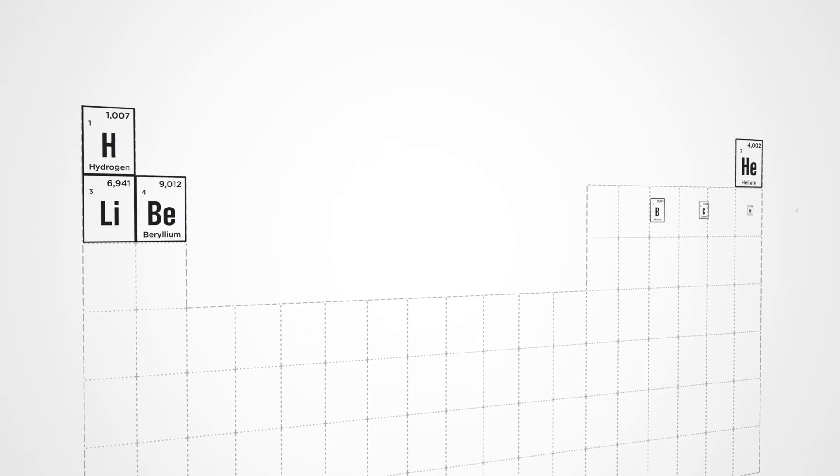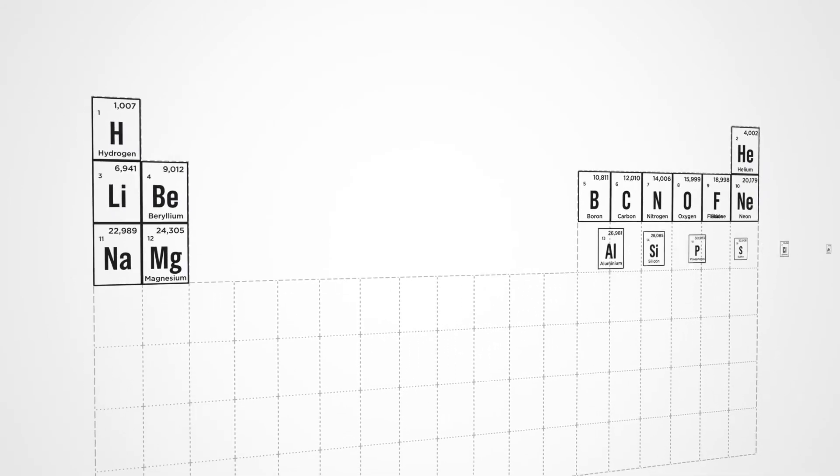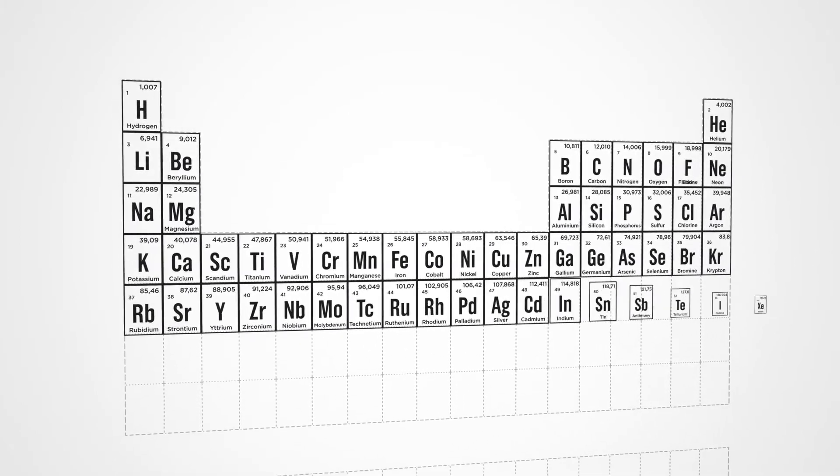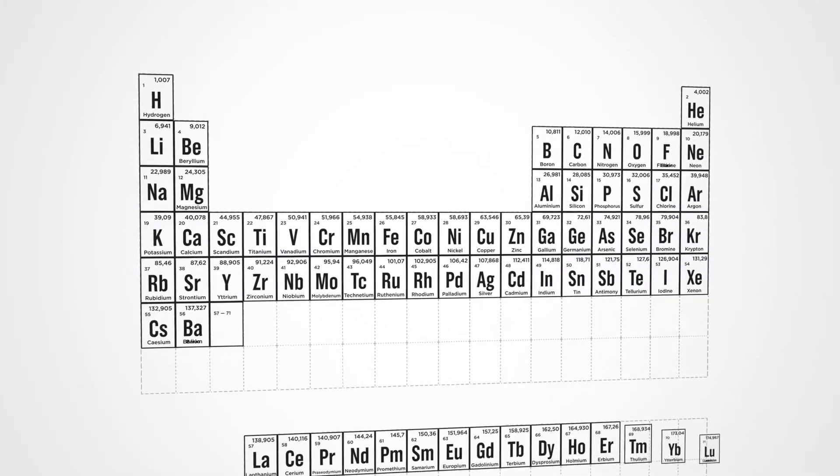The periodic table organizes the elements from smallest to largest according to its core and the distribution of electrons.